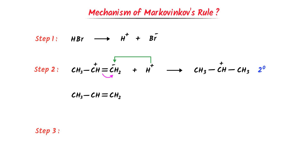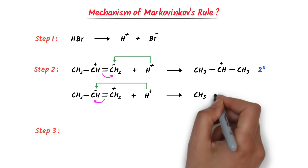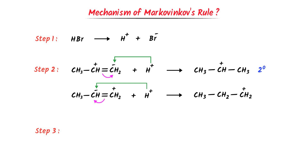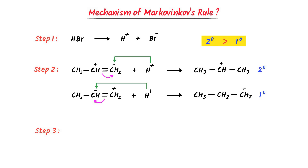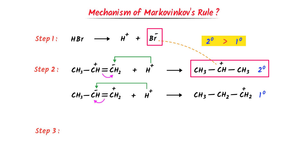There is another possibility: the pi electrons shift towards the second carbon, so negative charge appears on it and positive charge appears on the first carbon. The positive hydrogen attacks the negative carbon, giving us CH3–CH2–CH2(+), which is a first degree carbocation because the positive carbon is attached to only one carbon atom. Now, on which carbocation will the negative bromine attack? Second degree carbocation is more stable than first degree carbocation. Hence, negative bromine will attack on the second degree carbocation.